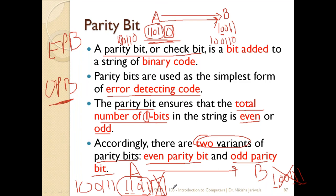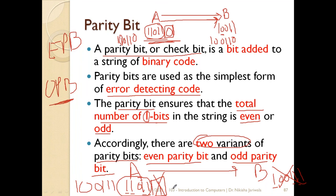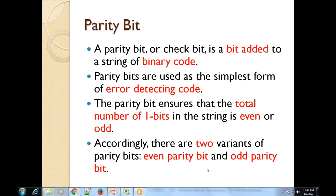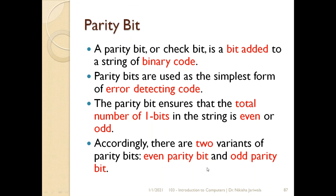Because this additional bit was only used to check whether the data received is correct or incorrect. So students, this is how parity bit is used to detect whether data sent over a network is correct or not. Parity bit is one of the techniques for error detection — there are many such techniques to check whether the received data is right or wrong.